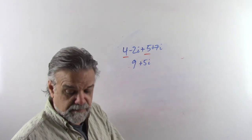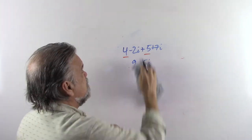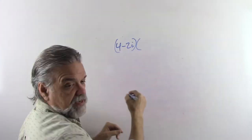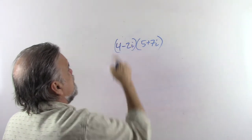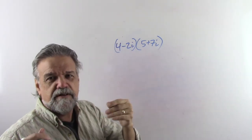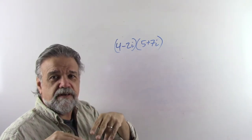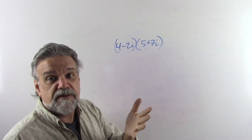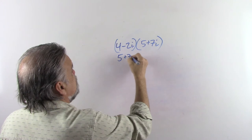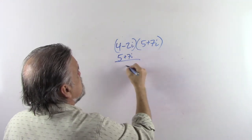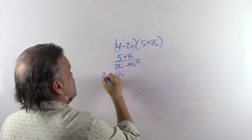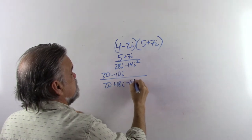Multiplication is also no big deal as long as you remember how to multiply binomials. Let's take those same two: (4 minus 2i) times (5 plus 7i). You can use FOIL, a box, or distribute twice — it all produces the same arithmetic. I'll do it vertically: 7i times negative 2i is negative 14i²; 7i times 4 is 28i; 5 times negative 2i is negative 10i; and 5 times 4 is 20. Adding them up gives 20 plus 18i minus 14i².